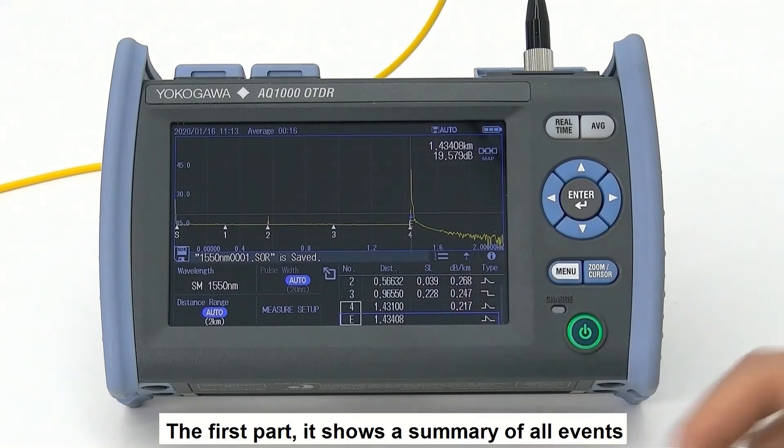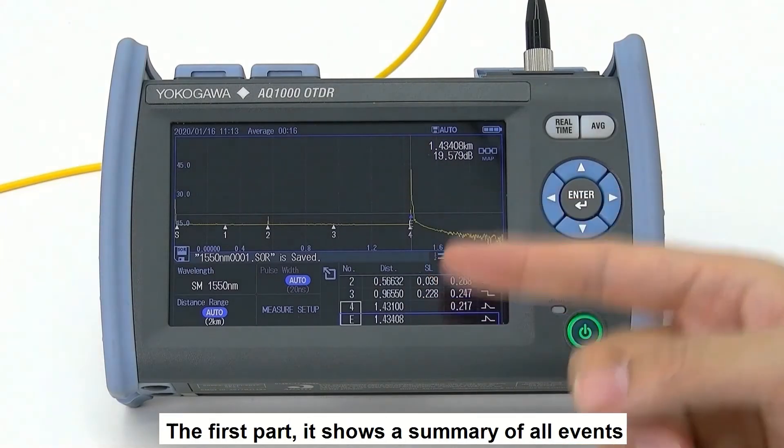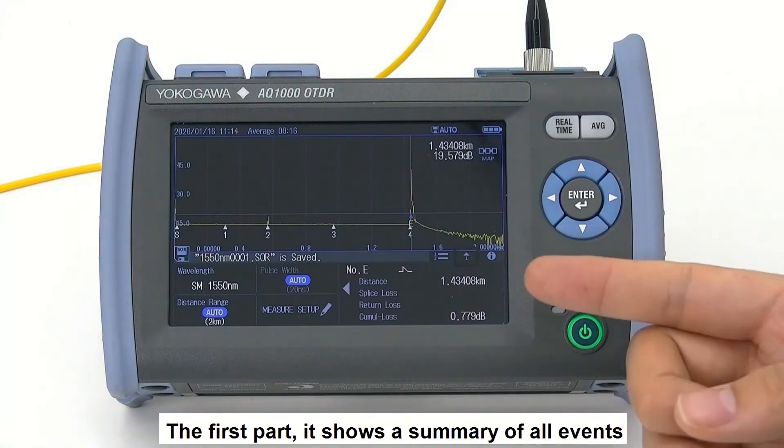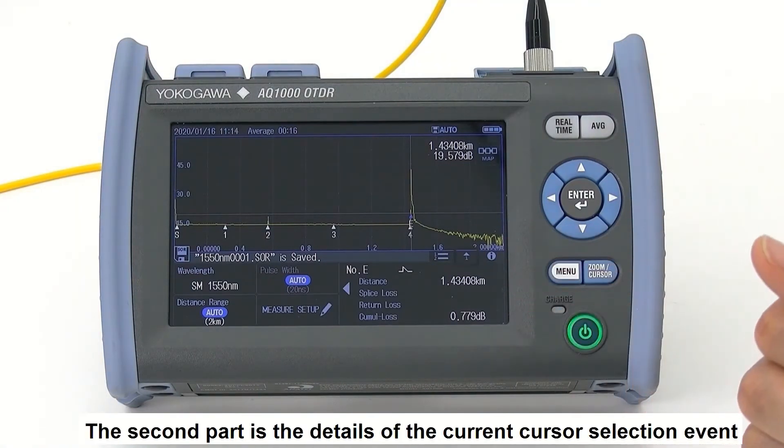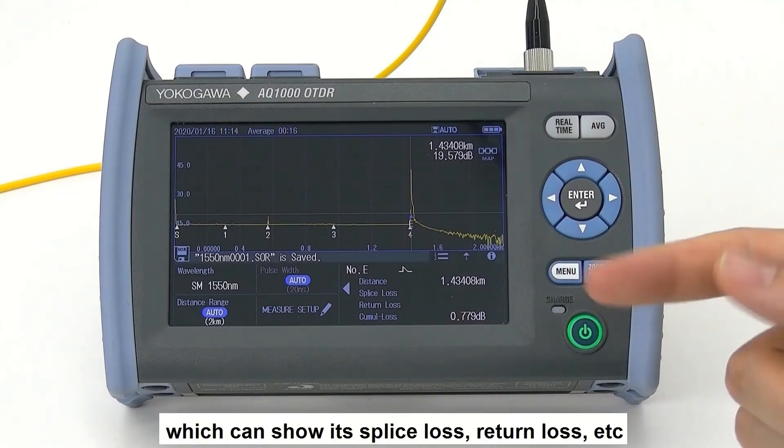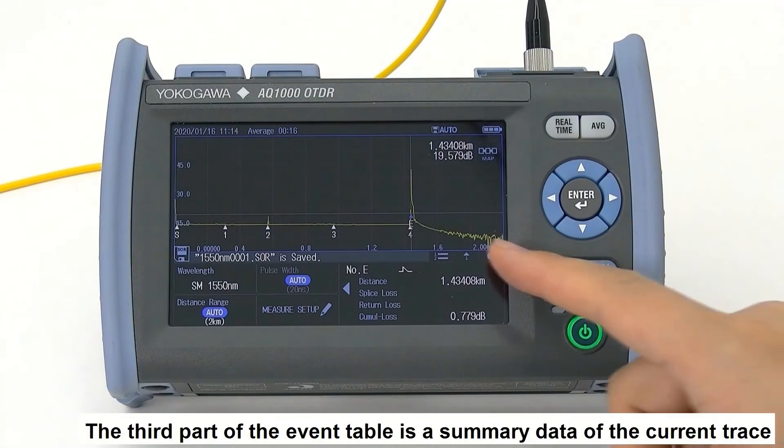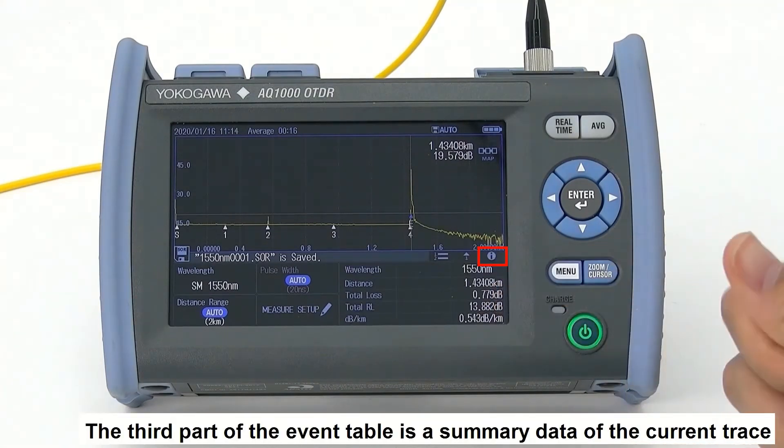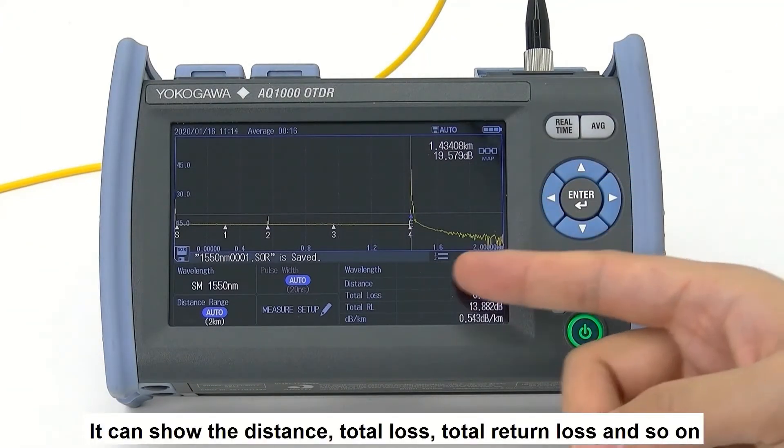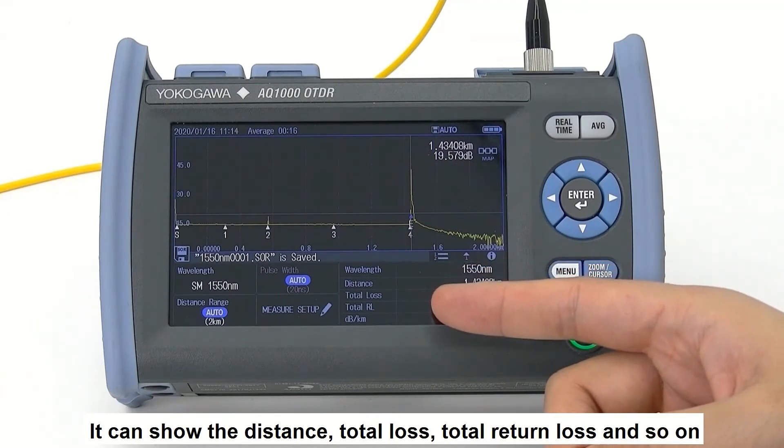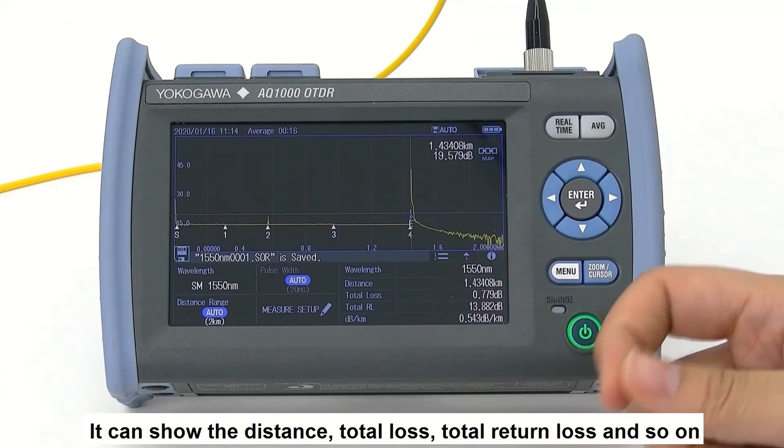The first part is a summary of all events. The second part is the detail of the current cursor selected event, which can show its splice loss, return loss, etc. The third part of the event table is the summary data of the current trace. It can show the distance, total loss, total return loss, and so on.